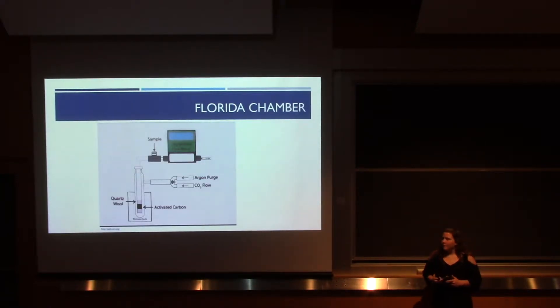This is a diagram of the Florida chamber, and it's a relatively simple design. They use an argon purge to purge the system of any contaminants. Then carbon dioxide flows into an outer quartz vessel, which has an inner quartz vessel within it, with carbon located in between two pieces of quartz wool that holds the reactant in place. This whole vessel is within a microwave chamber, where it allows the carbon dioxide to react with the carbon. Then carbon monoxide is emitted, where a sample can be taken and analyzed in a gas chromatograph.